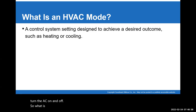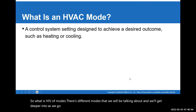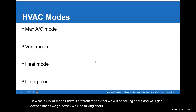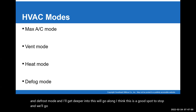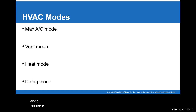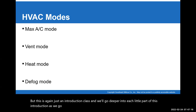We also have a lot of different electrical switches that control the blower motor and the compressor. If it has a cycling clutch system, it will control the clutch. What are HVAC modes? There are different modes we'll talk about and get deeper into: max AC mode, vent mode, heat mode, and defrost mode. I think this is a good spot to stop, and we'll look forward to my next video on air conditioning. This is just an introduction class, and we'll go deeper into each little part as we go along. Hope to see you soon — take care and until next time, be good and we'll see you in class.